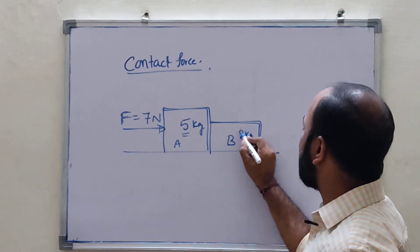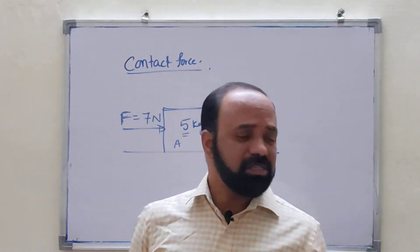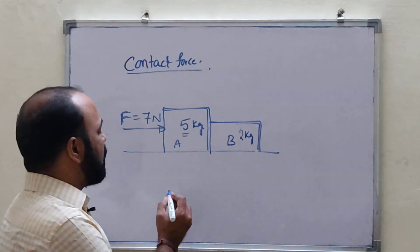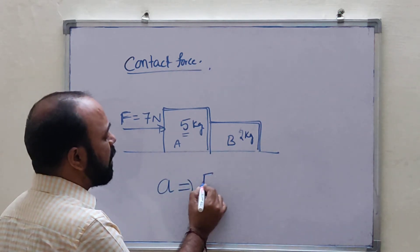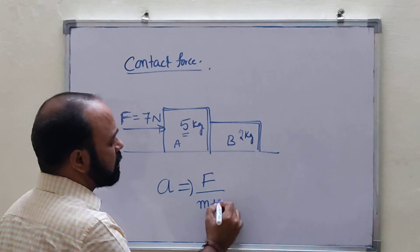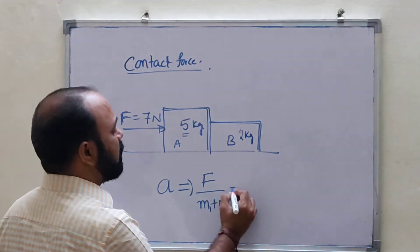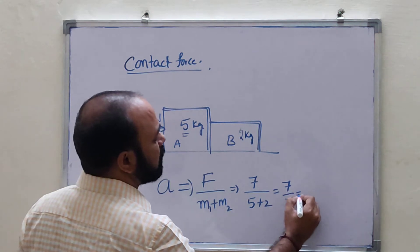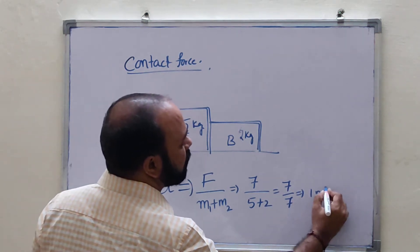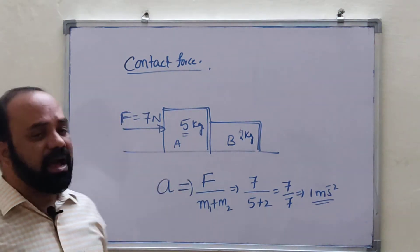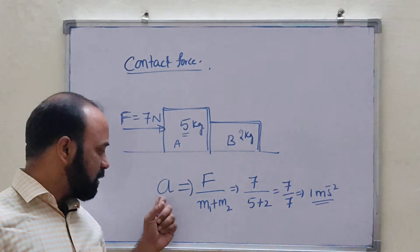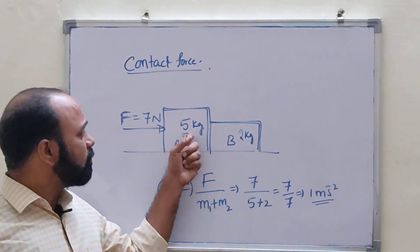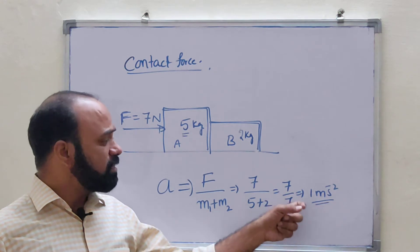Students, in this problem they may ask the acceleration of the system, or they may ask what is the contact force between the 5 kg mass and 2 kg mass. First, find out the acceleration A. Acceleration formula: A equals F divided by M1 plus M2. The given force is 7 Newton, and masses are 5 kg and 2 kg. So 7 divided by 7 equals 1 meter per second square.